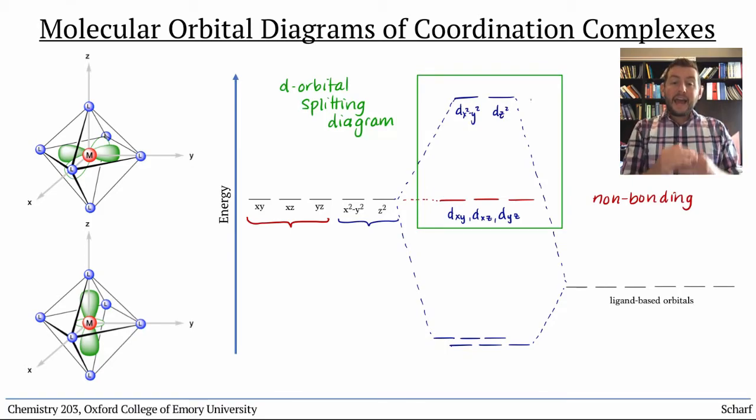The gap, or splitting, between the non-bonding and antibonding orbitals is often called delta octahedral, or Δₒ.